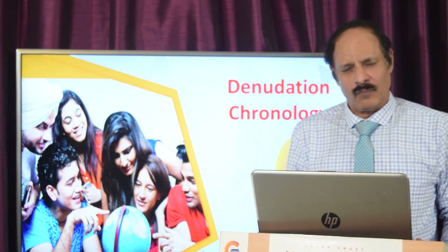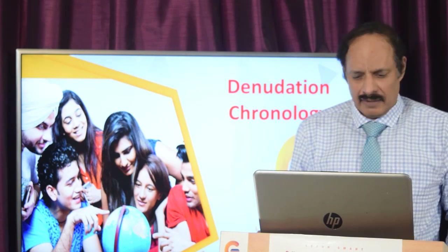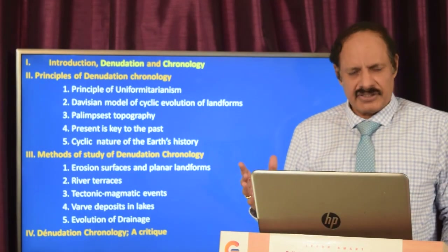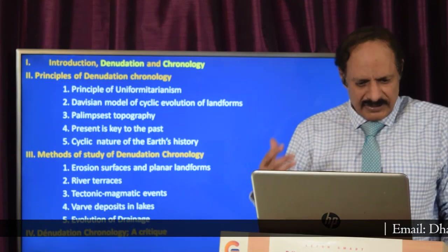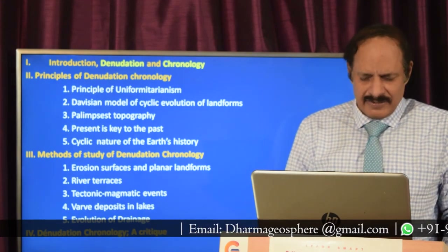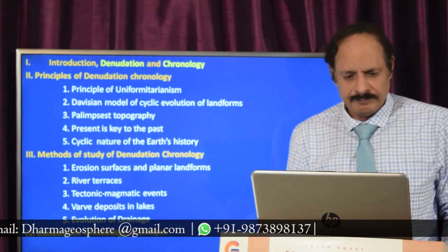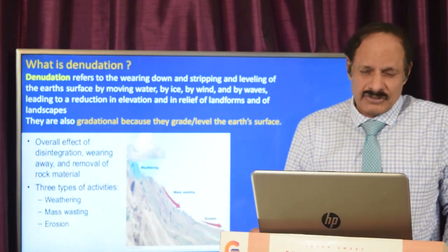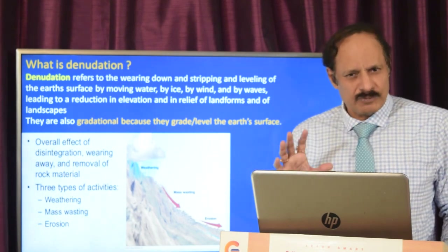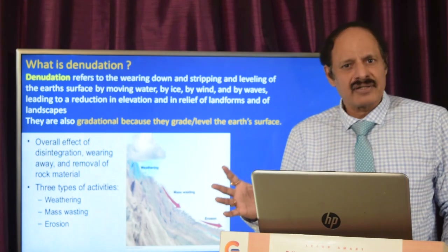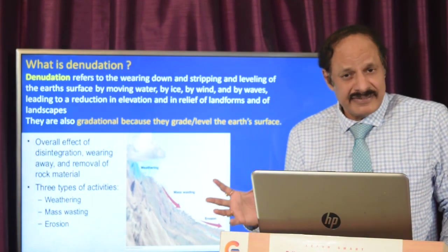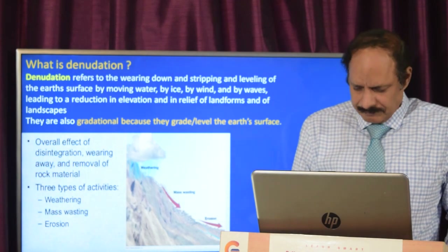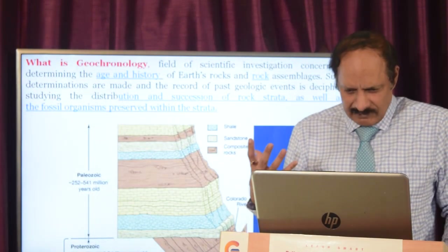Now we'll understand the various principles and methods in denudation chronology. The outline includes: introduction, what is denudation, what is chronology, the principles of denudation chronology, the methods of study, and a little criticism. What is denudation — you would have read about it during your prelims. Remember it also includes mass wasting, which does not involve the usual agents but is due to gravity, causing removal of material along the slope.